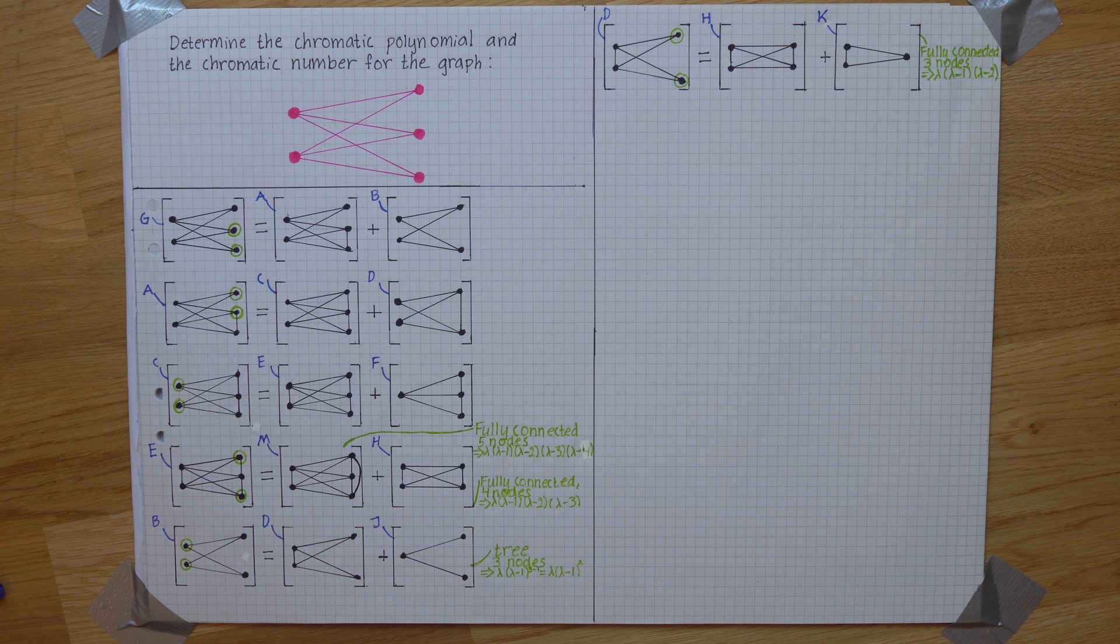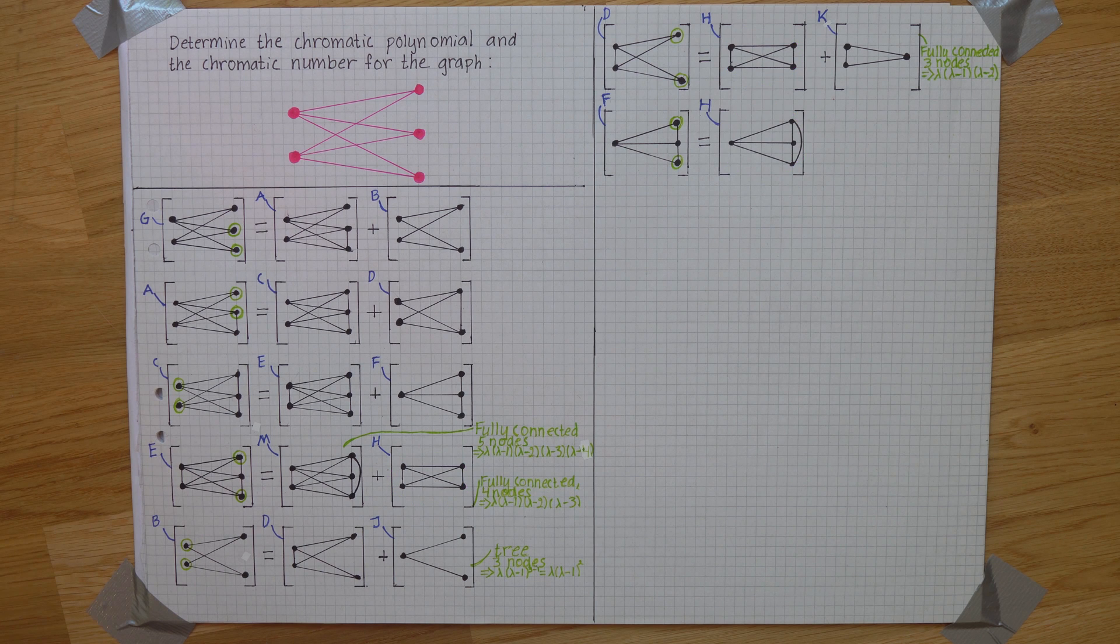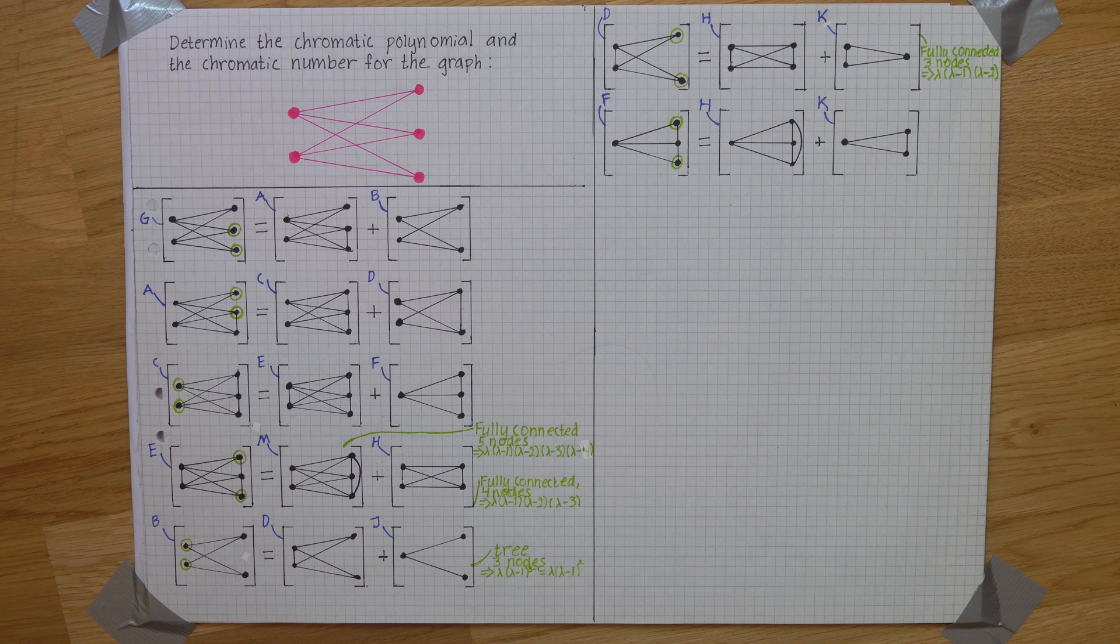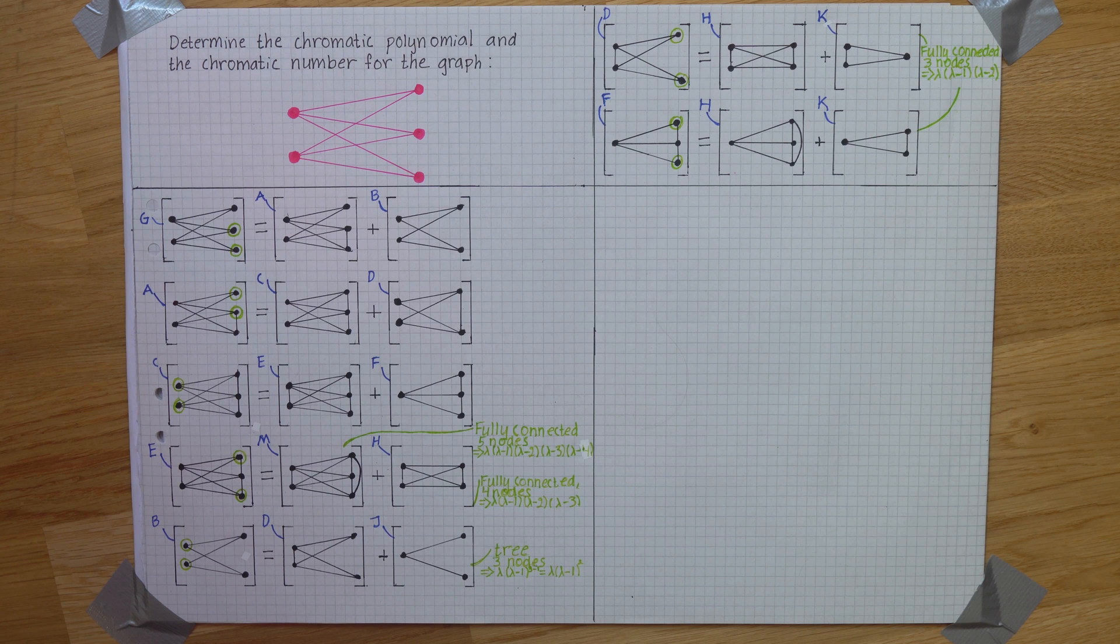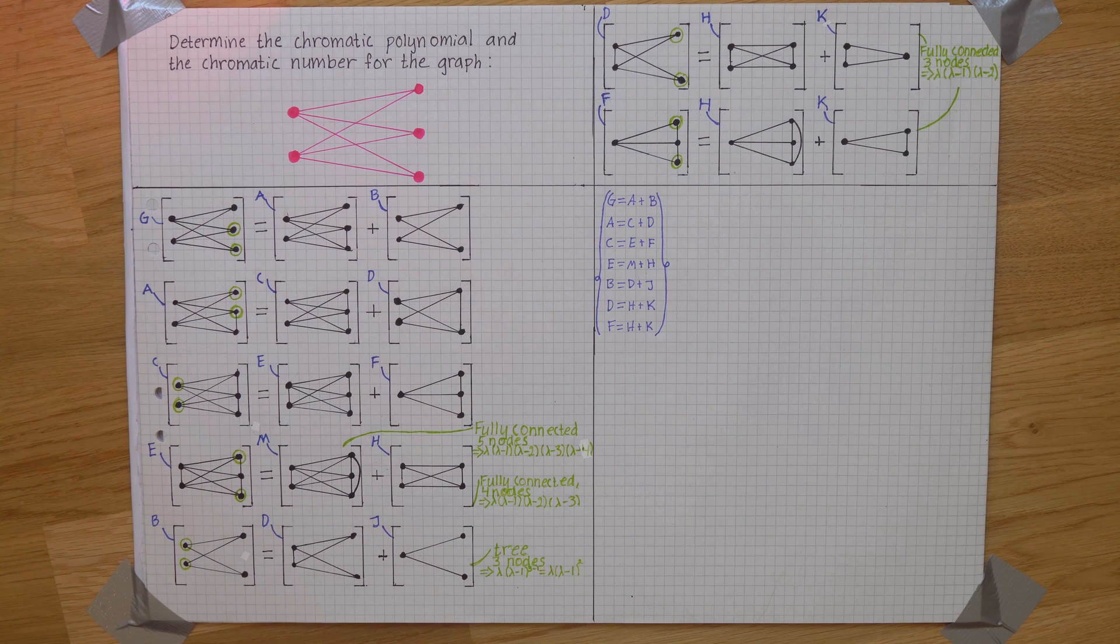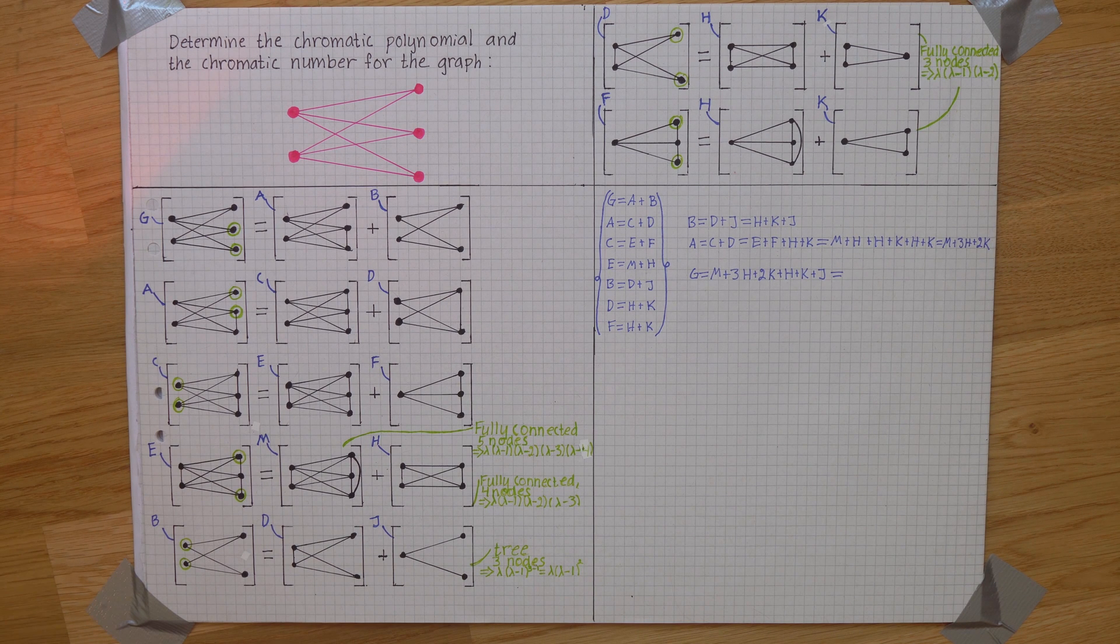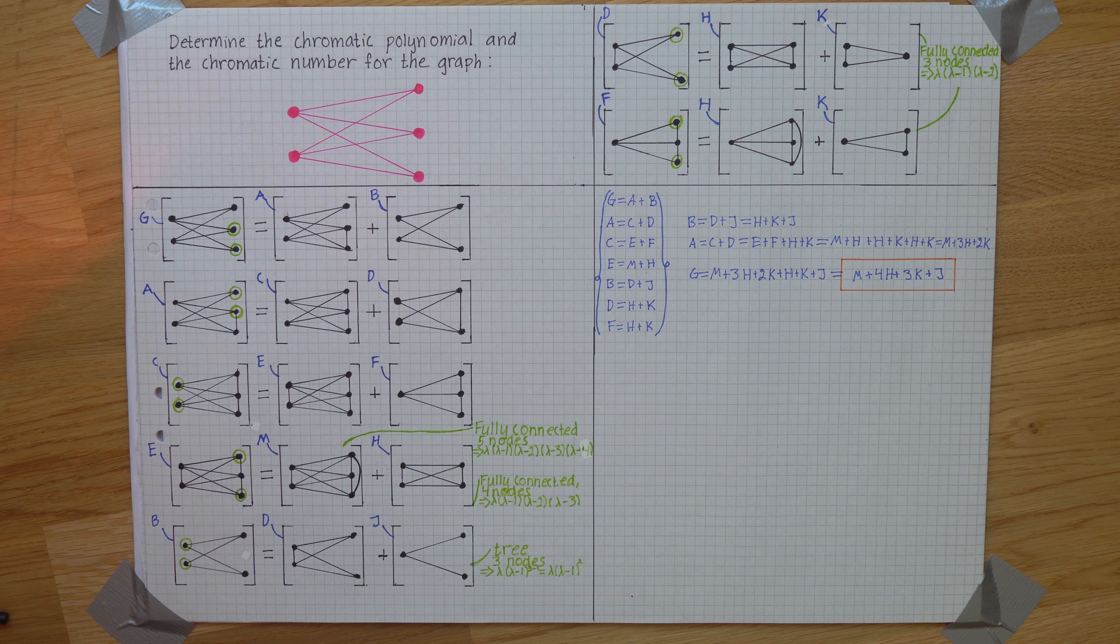Last one is F where if we add an edge here we get even though it may not look like it but it is actually H plus K and both of those we already know the polynomial for. Now that everything is broken down we have a set of equations like G is equal to A plus B, A is C plus D and so on. Combining all of these is giving us that the full graph G is equal to M plus 4H plus 3K plus J.